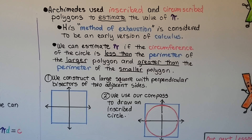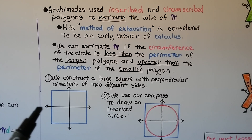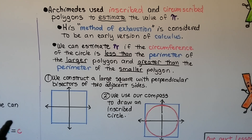Archimedes used inscribed and circumscribed polygons to estimate the value of pi. His method of exhaustion is considered to be an early version of calculus. We can estimate pi because the circumference of the circle is less than the perimeter of the larger polygon and greater than the perimeter of the smaller polygon.